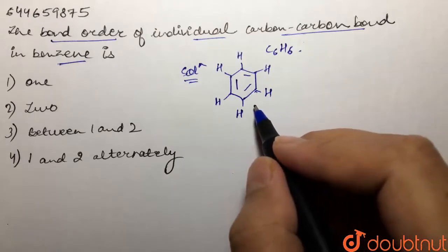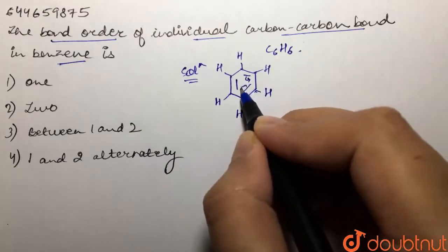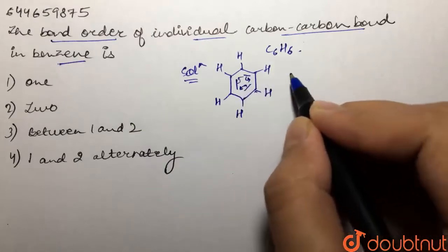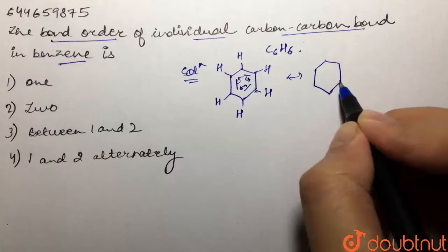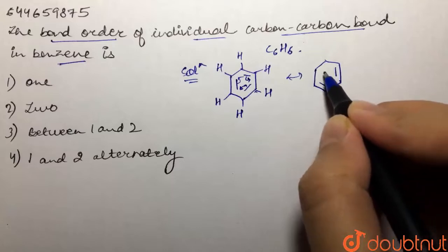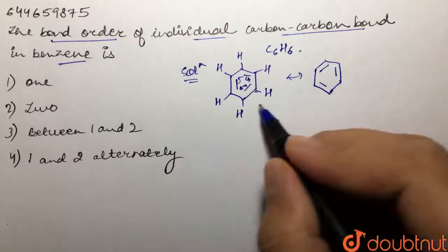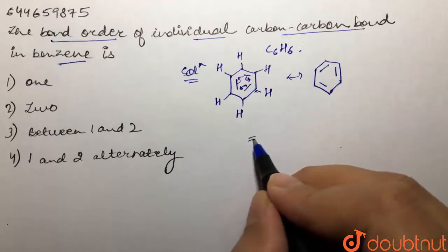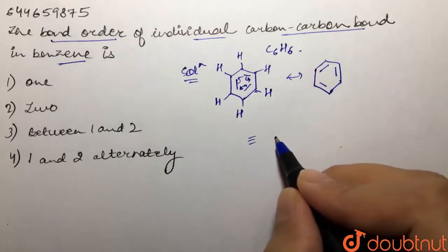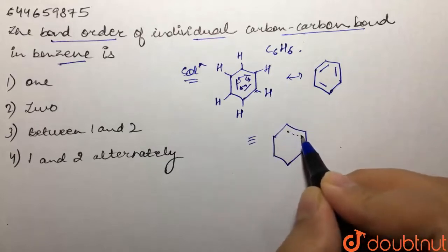Now, what happens in benzene? There is a delocalization of pi electrons within the ring. This double bond can shift over here, this can shift over here, and this can shift over here. So we can draw another resonating structure where the double bonds are present in alternate positions. There is delocalization of pi electrons within the ring.